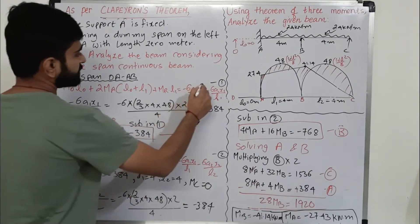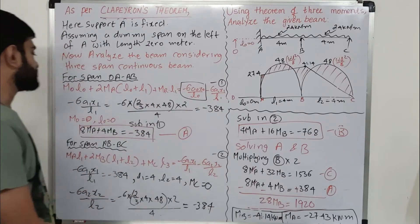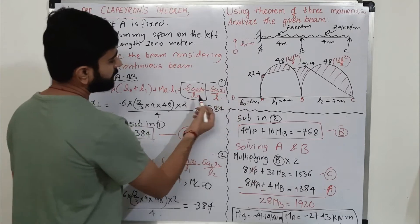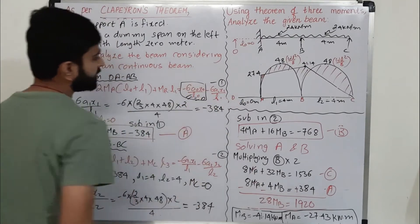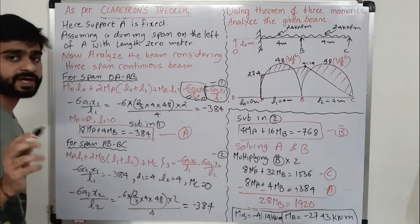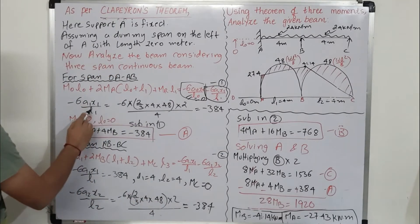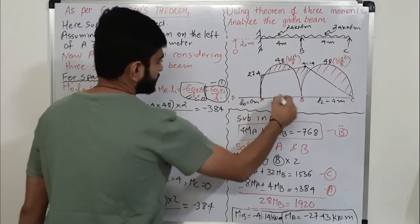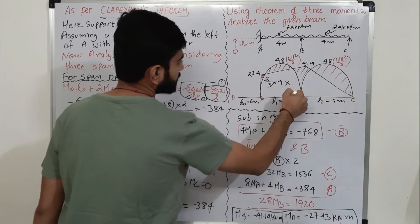We need to find -6A₁x₁/L₁. Since A₀ is zero and the length L₀ is zero, the first term is zero. So we only need to find the second term: -6A₁x₁/L₁. This equals -6 multiplied by the area which is (2/3) × base × altitude, where the base is 4 meters and the altitude is 48.